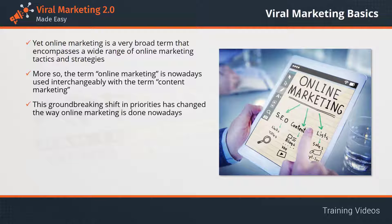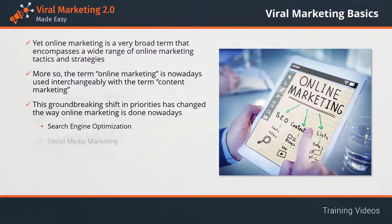This groundbreaking shift in priorities has changed the way online marketing is done nowadays, with newer strategies taking the spotlight alongside classics such as email marketing and banner ads. Examples include search engine optimization — the process of refining online content in a way that makes it rank higher in search engine results when potential customers use search terms that match keywords in that content.